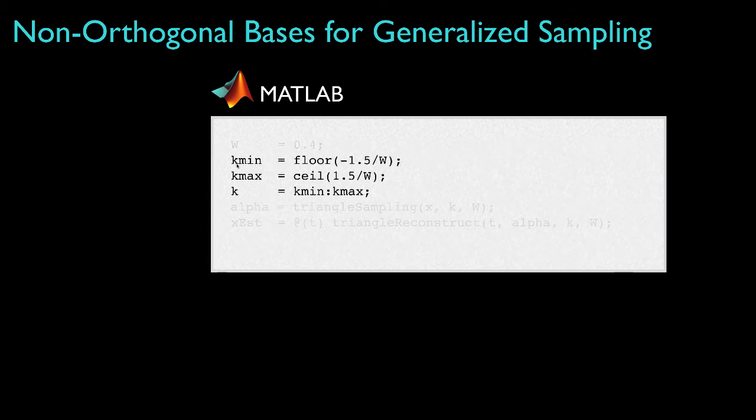While proceeding, next I'll define the set of coefficient indices that I'll use for my sampling and reconstruction. Because the spacing between basis functions is w, I can figure out which indices are needed to span, say, from negative 1.5 seconds out to 1.5 seconds by dividing those times by the sample spacing. I've picked those times because I know that the signal I'm sampling is limited to the interval minus 1 to 1, so this should give me plenty of room to cover that interval.